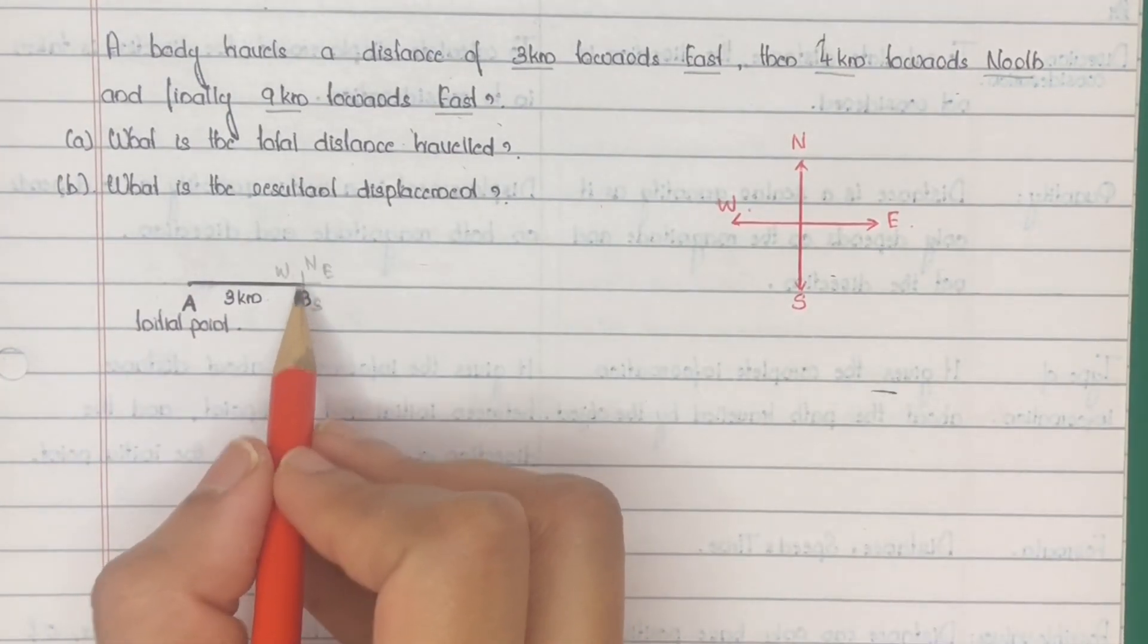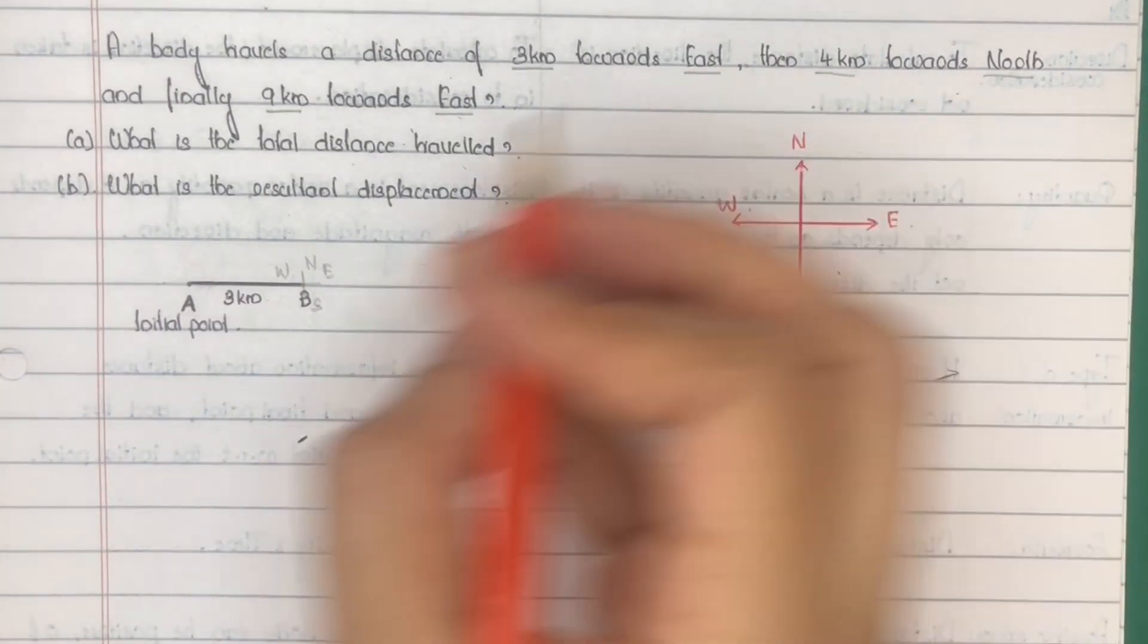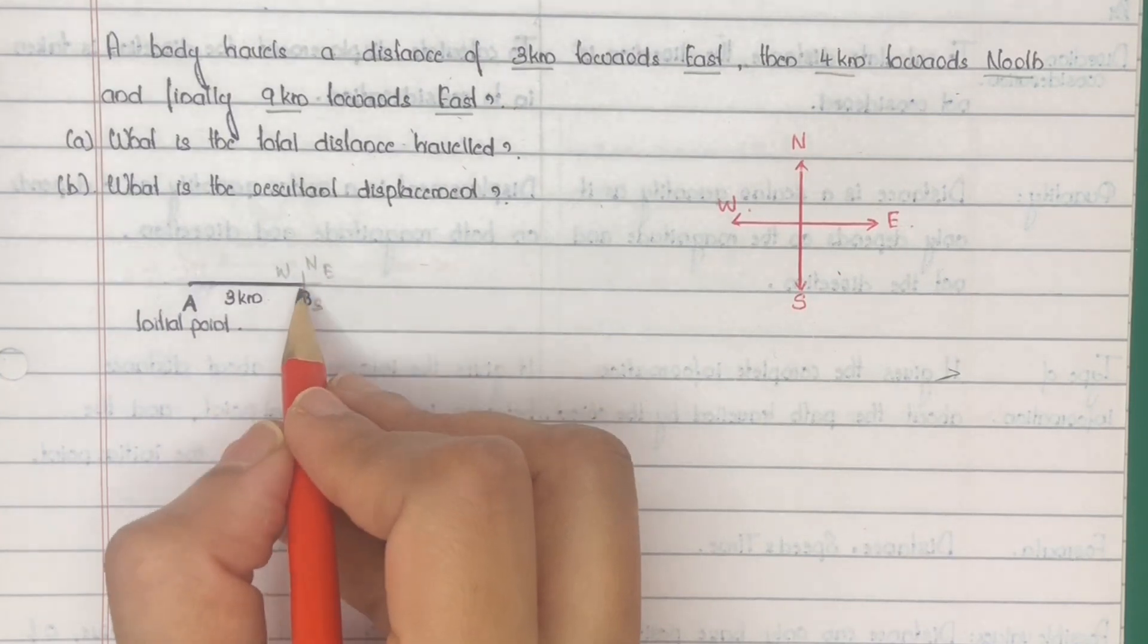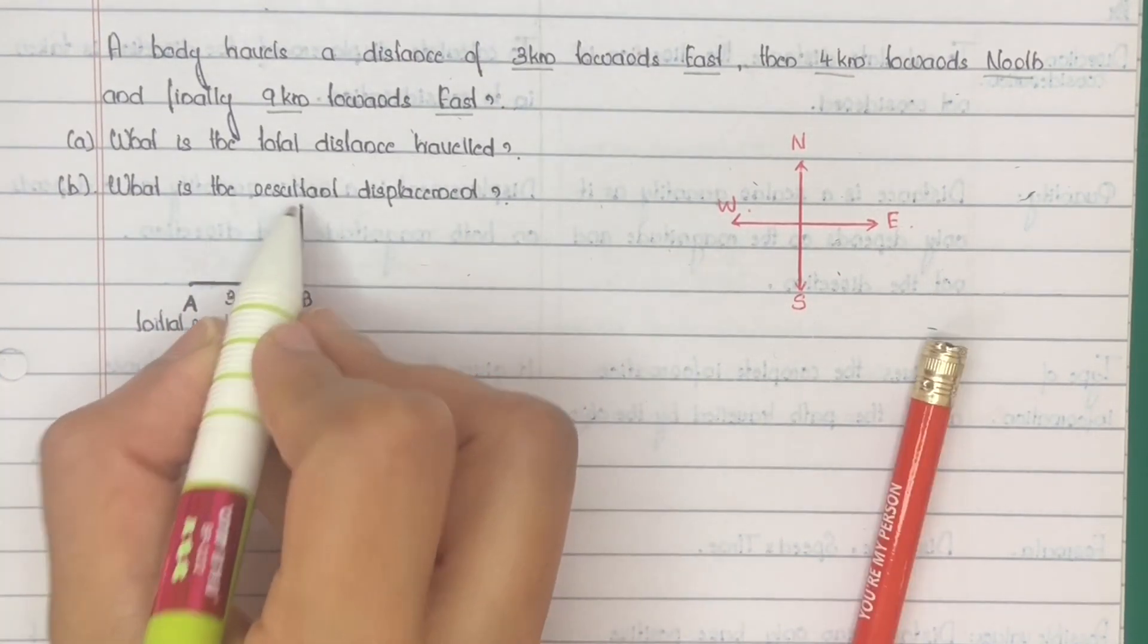Now the body is at point B. Mark rough direction at B. Next, then 4 km towards north. So north means upward direction. So from here 4 km towards north. Mark this point as C.